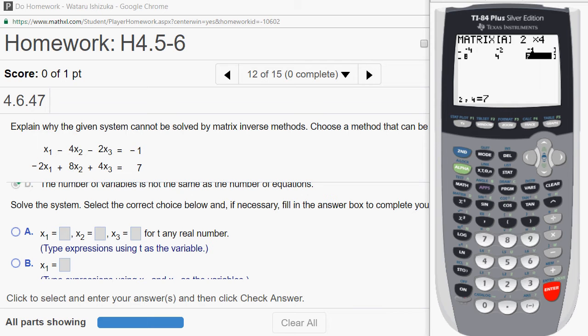So we have that. I'm going to go quit, and then I'm going to just make sure that we have the right matrix. So choose A here. So we have one, negative four, negative two, negative one, negative two, eight, four, seven. So we have the right matrix here.